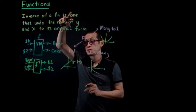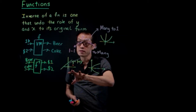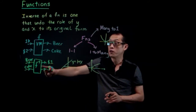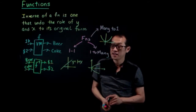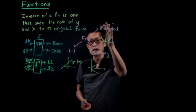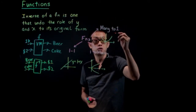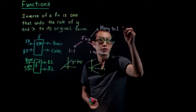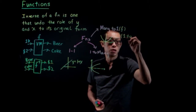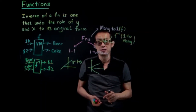Following this definition: if you have a one-to-one function, its inverse is also one-to-one because it's simply a role reversal. However, when you take a many-to-one function and do its inverse, you get a one-to-many, which is not a function.